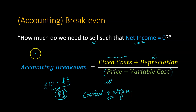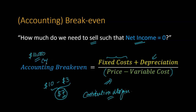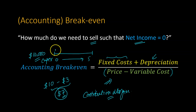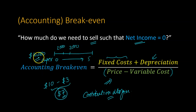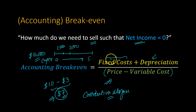Depreciation represents the use of any capital expenditures made to start the project. Suppose you started a project costing $10,000 in CapEx, and you use that machinery over five years — $2,000 per year in depreciation. Including depreciation as part of your fixed costs means you're trying to cover your upfront capital expenditures using your margins — covering not only monthly fixed costs like insurance, but also depreciation representing that upfront CapEx.